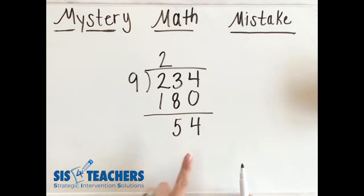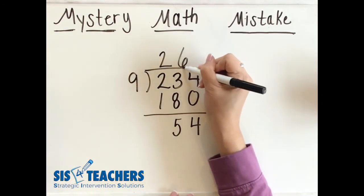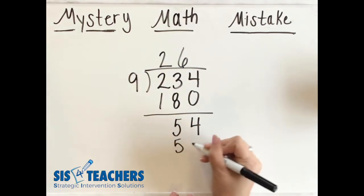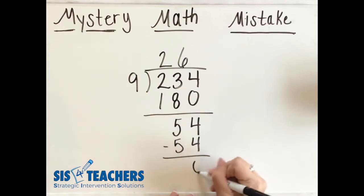I know that 9 goes into 54. Hey I know that fact. 6, it goes in 6 times. 6 times 9 is 54.